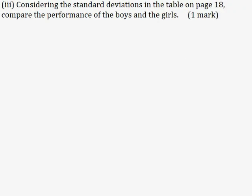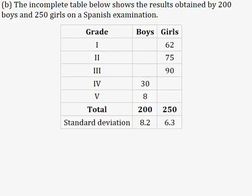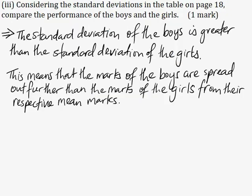Part 3: Considering the standard deviations in the table, compare the performance of the boys and the girls for one mark. The standard deviation indicates how much the data varies from the mean. In this table, the standard deviation is 8.2 for the boys and 6.3 for the girls. This implies that the standard deviation of the boys is greater than that of the girls, meaning the marks of the boys are spread out further than the marks of the girls from their respective mean marks.